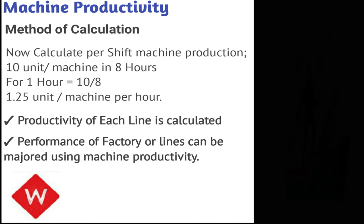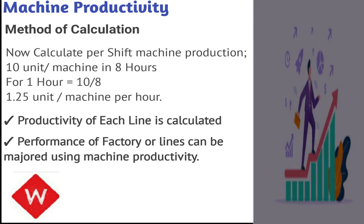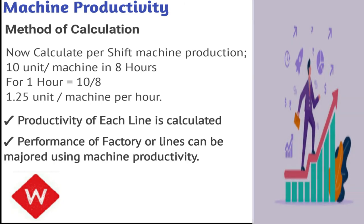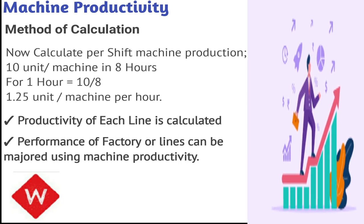Then we convert the shift into hours. One shift is 8 hours, so we divide by 8 hours, and we get 1.25 units per machine per hour. That means one machine produces 1.25 units in one hour — this is your machine productivity.